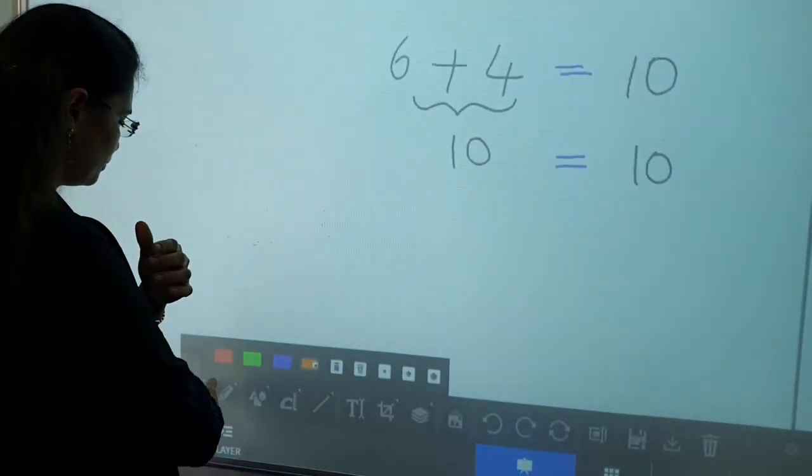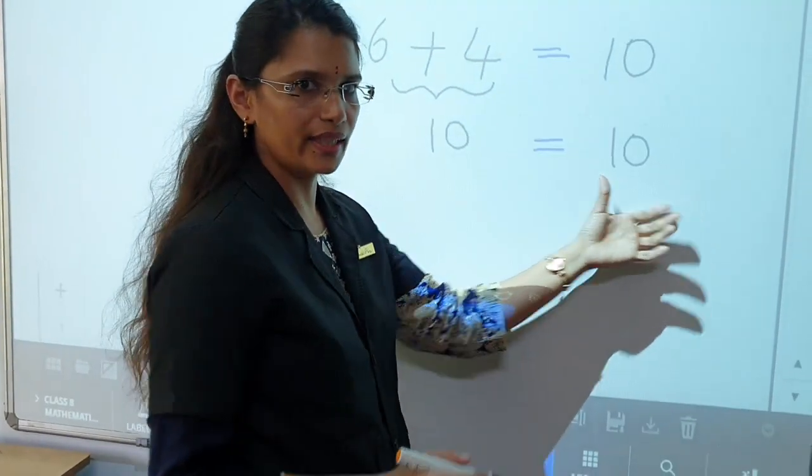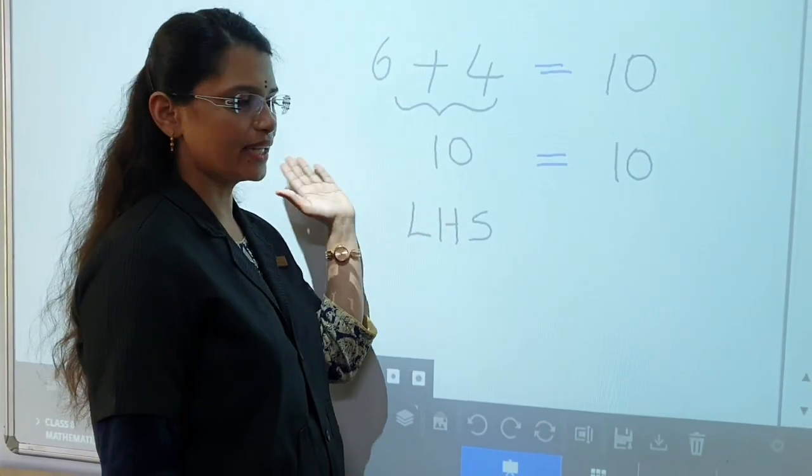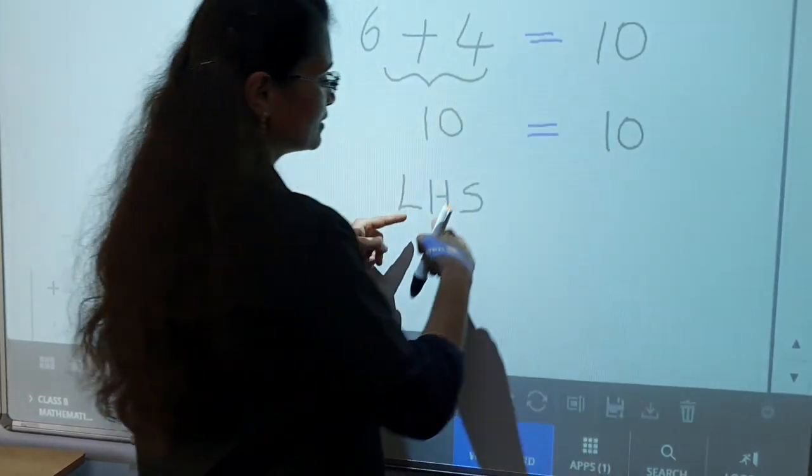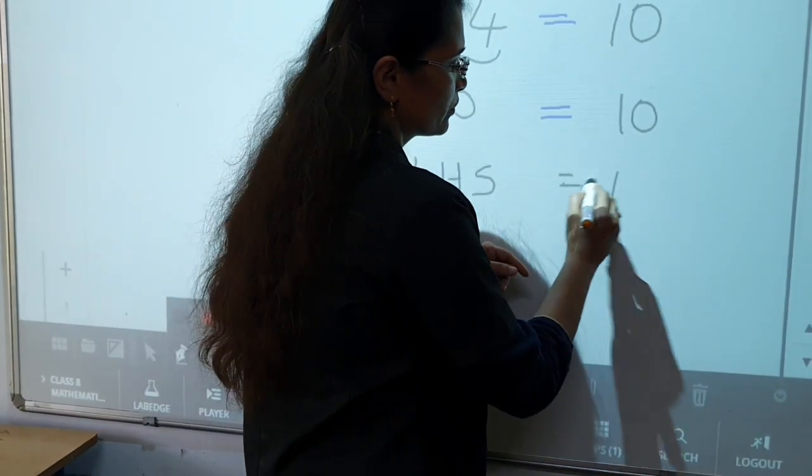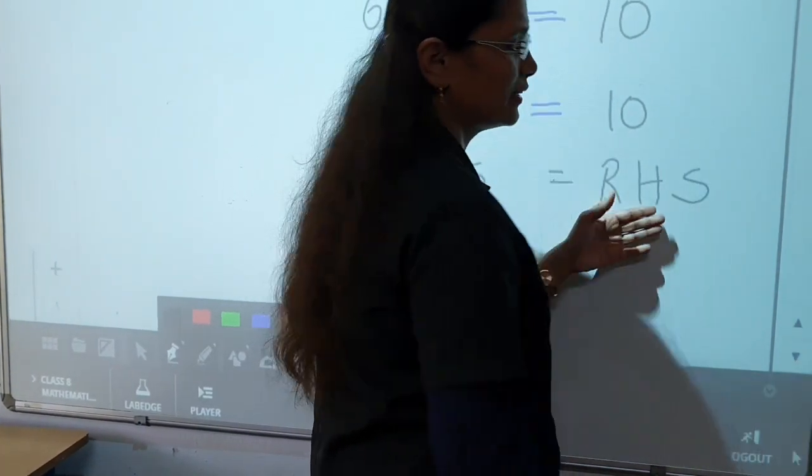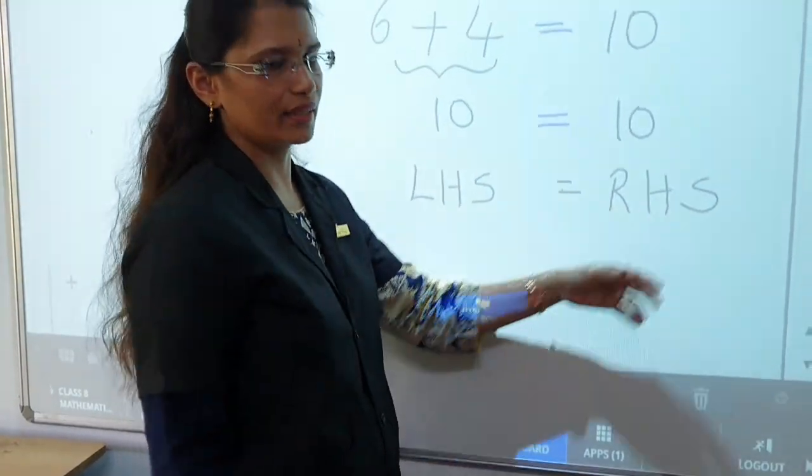Here, 10 is equal to 10. This is left hand side. Left hand side. And this is right hand side. That is, left side. Left hand side is equal to right side. That is, right hand side. Left hand side is equal to right side.